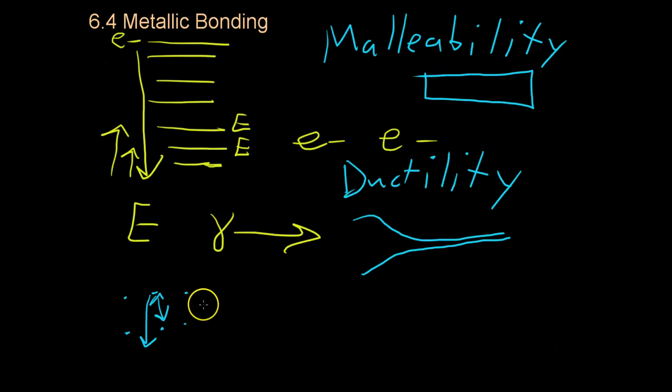Whereas in an ionic compound, if you try to slide, say, chlorine past another chlorine, where they're both ionic, this repulsion will cause the layers to shear, breaking the compound.